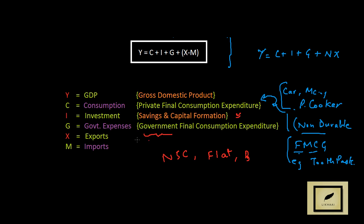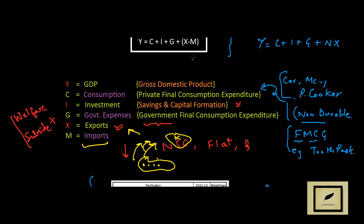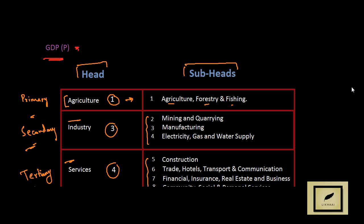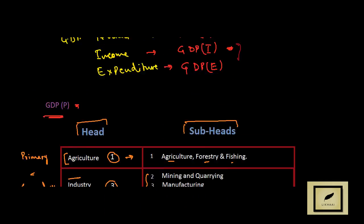Then comes G, government expenses. One thing to note here is that government expenses do not include the welfare part or subsidies, as per the GDP definition such items should not be calculated. Then comes exports — all products that we produce in our country and send outside; expenditure on these exports is counted. However, imports are deducted, since products manufactured in another country will not be counted in this country's GDP even if we are spending on those products.